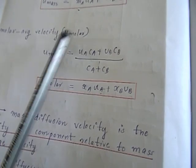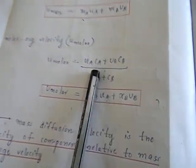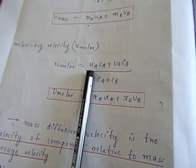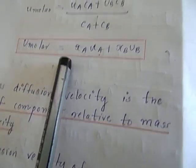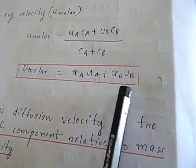Molar average velocity U_molar depends upon the molar concentration. So U_molar equals U_A C_A plus U_B C_B divided by C_A plus C_B. That is, U_molar is equal to X_A U_A plus X_B U_B.